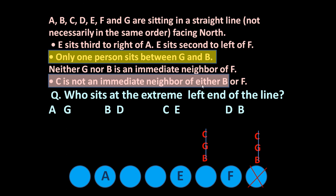C is not an immediate neighbour of either B or F. C cannot occupy the position next to F, and the only remaining position for C is the one adjacent to B and G. Since C cannot be a neighbour of B, B cannot occupy that adjacent position. So B occupies the far end position and G occupies the other. The only remaining person is D, who takes the last vacant position.